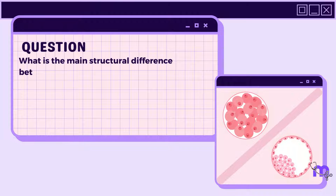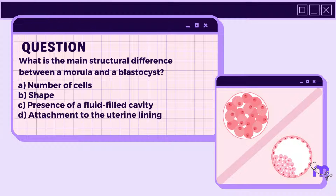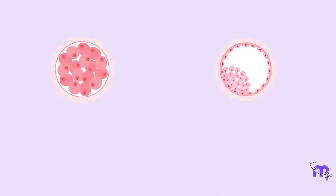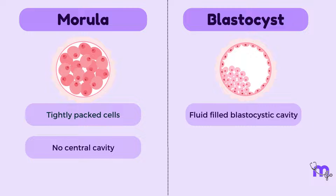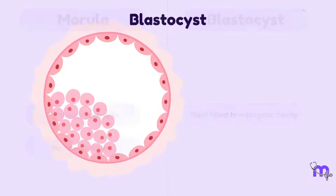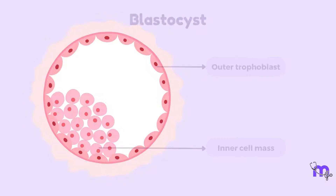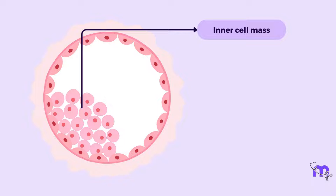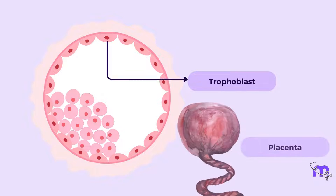What is the main structural difference between a morula and a blastocyst? A. Number of cells. B. Shape. C. Presence of a fluid-filled cavity. D. Attachment to the uterine lining. Option C is the correct answer. The main structural difference is the presence of a fluid-filled cavity called the blastocystic cavity, which separates the cells into an inner cell mass and the outer trophoblast. The inner cell mass forms the three germ layers — ectoderm, mesoderm, and endoderm — while the outer trophoblast forms the placenta.